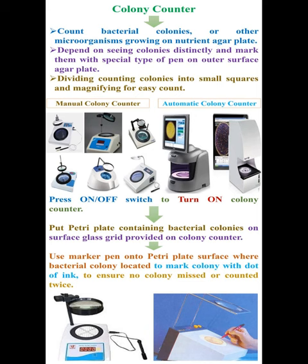To use the Colony Counter, press the on/off switch to turn it on. Then put the Petri plate containing bacterial colonies on the surface glass grid provided on the Colony Counter. Finally, use a marker pen on the Petri plate surface where the bacterial colony is located, to mark each colony with a dot of ink, to ensure no colony is missed or counted twice.